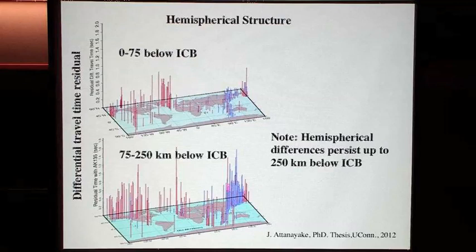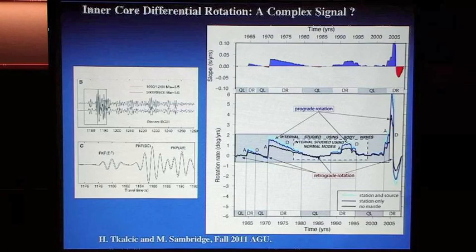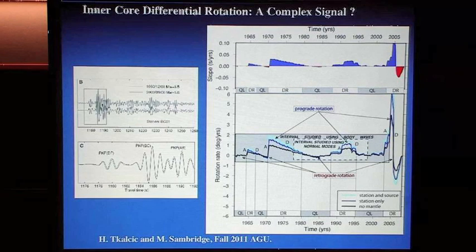The deeper inner core shows that hemispherical or degree-one differences persist to great depth. If the inner core is differentially rotating, this poses a challenge: how do we maintain these hemispherical differences if the inner core is rotating at different rates with respect to the mantle? This hemispherical structure would be progressively erased unless the differential rotation is not steady, but rather some kind of wobble — both prograde and retrograde rotation.